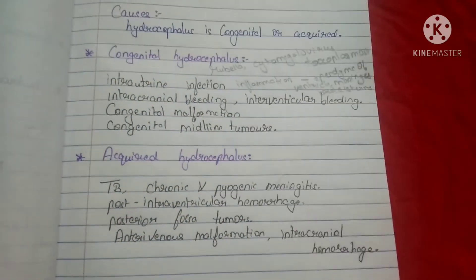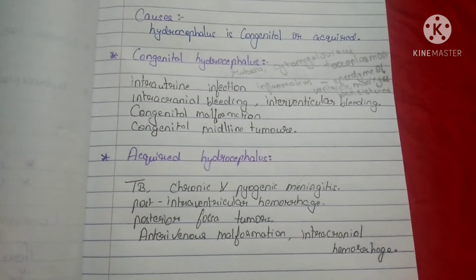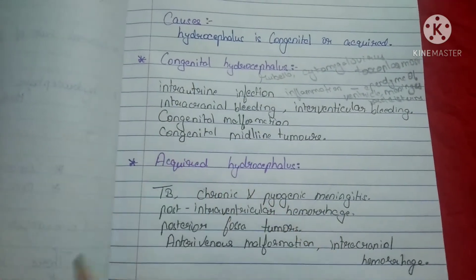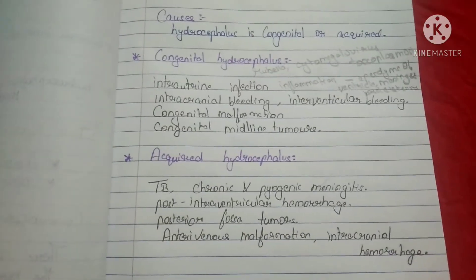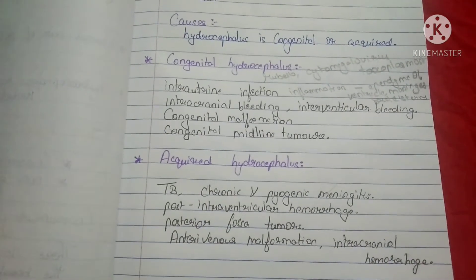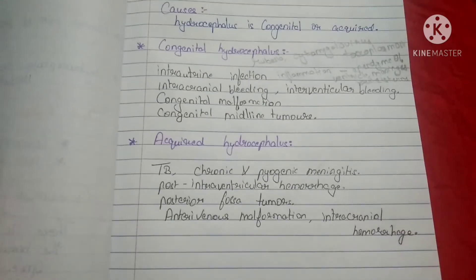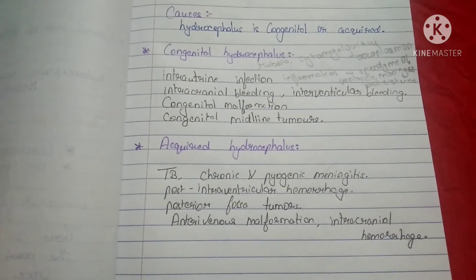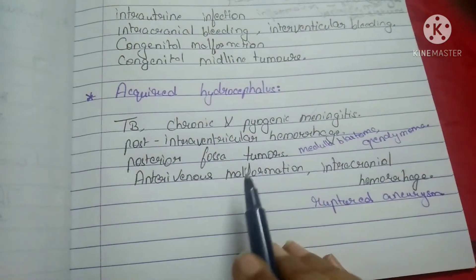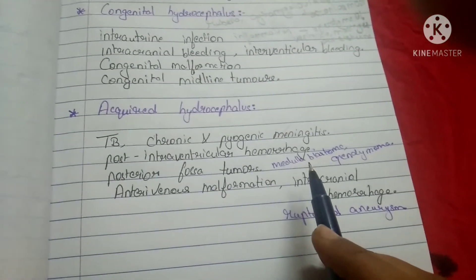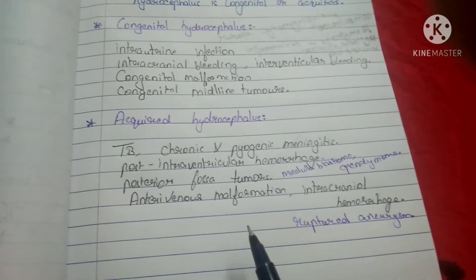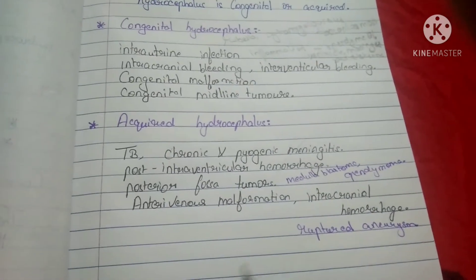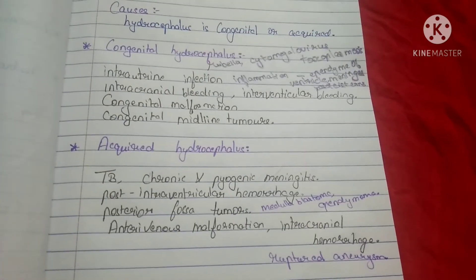Other congenital causes include intraventricular hemorrhages, congenital malformations causing blockage of CSF flow, and congenital tumors obstructing CSF flow. Acquired hydrocephalus is caused by TB or chronic and pyogenic meningitis, post-intraventricular hemorrhage, posterior fossa tumors like medulloblastoma and ependymoma, arteriovenous malformations, intracranial hemorrhage, and ruptured aneurysm.